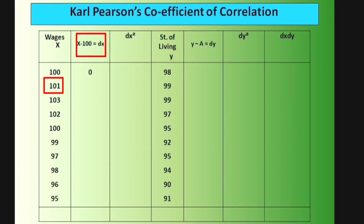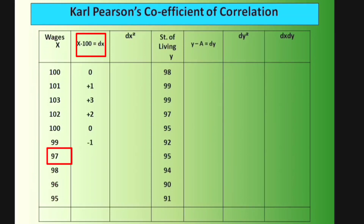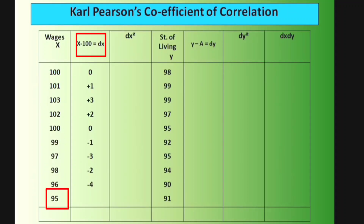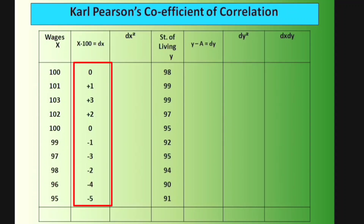Using dx = x − 100: 100−100=0, 101−100=1, 103−100=3, 102−100=2, 100−100=0, 99−100=−1, 97−100=−3, 98−100=−2, 96−100=−4, 95−100=−5. The plus values sum to 6 and minus values sum to 15, so Σdx = −9.